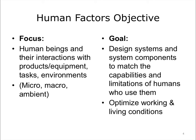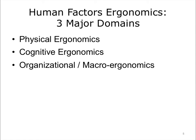What is the central focus of human factors work? Broadly, it is people and their interaction with all of the technologies and systems. The goal of this work is to optimize these technologies such that they match the capabilities and limitations of people who use them. Human factors ergonomics has three main domains. Ergonomics is broadly conceived as the study of work and factors that affect it, and the term is sometimes used interchangeably with human factors.